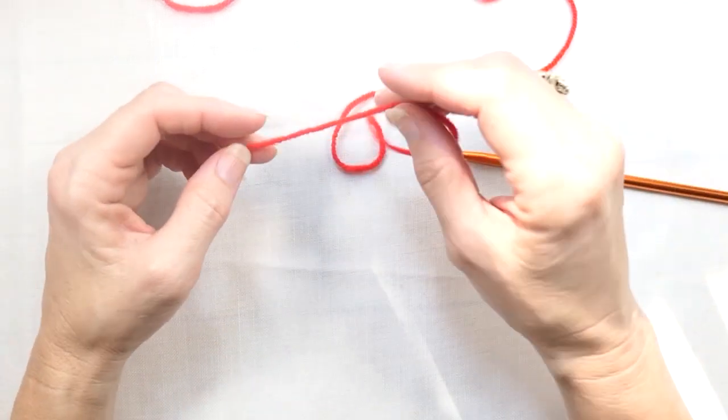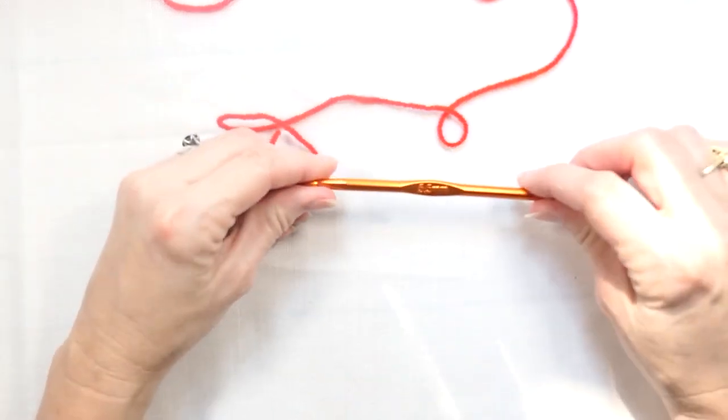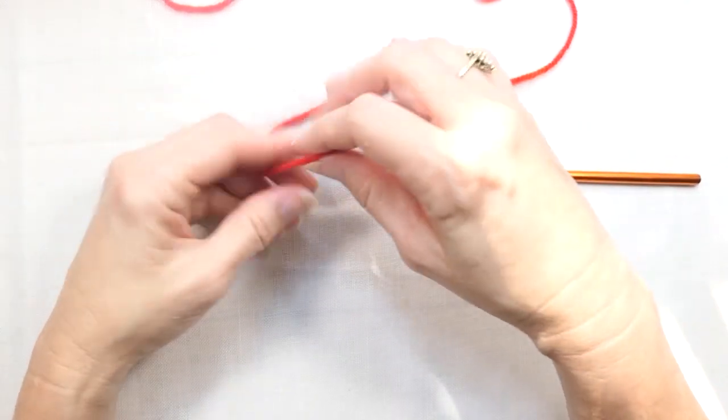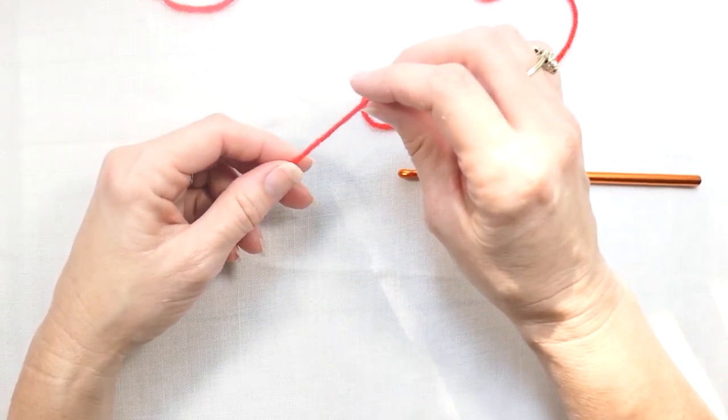So what I'm going to be using is just using a red worsted weight yarn and I am using my five-and-a-half millimeter hook here. And what I'm going to do is I'm going to start off like I do with my regular magic ring.